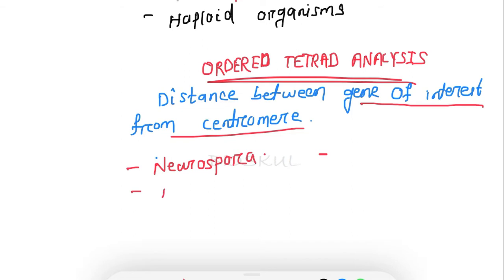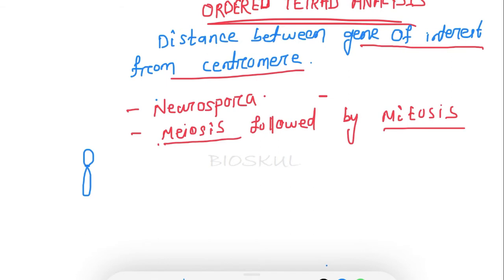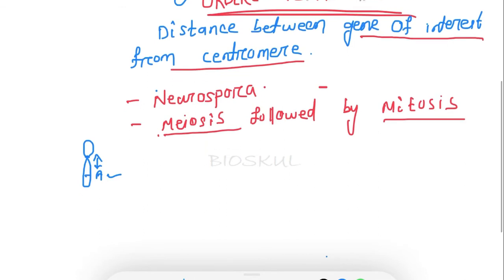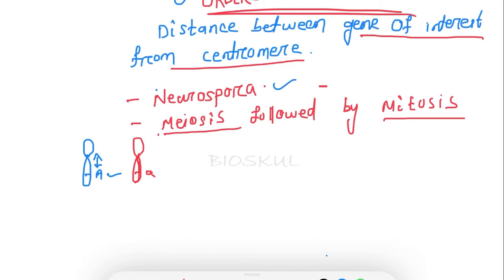Neurospora undergoes meiosis followed by one round of mitosis. Let's understand by an example. This is the chromosome, and this one is the centromere. Let's say the gene of interest is 'A'. By using ordered tetrad analysis we will find out the distance between gene of interest 'A' from the centromere. This distance we can calculate using ordered tetrad analysis. At the end of meiosis, the tetrad that is formed is used to find out the gene distance.